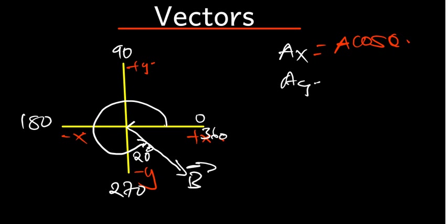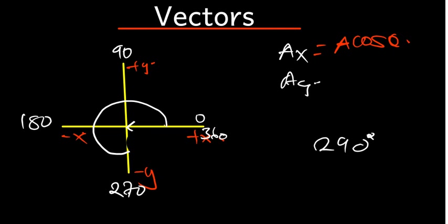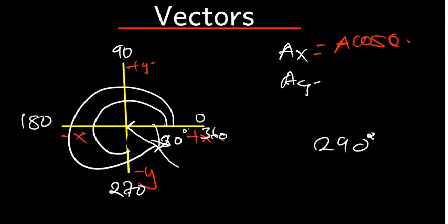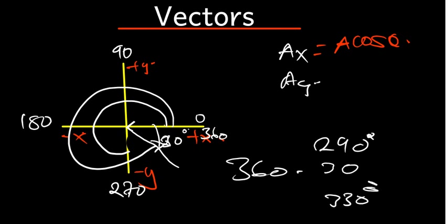If a vector is in the fourth quadrant and the angle given is 30 degrees near the positive x-axis, we get the angle from positive x all the way until it touches the vector. We know the full circle is 360, so it's going to be 360 minus 30, which gives us 330 degrees. That is how we get the angles correctly — very important that you know that.